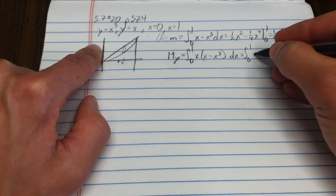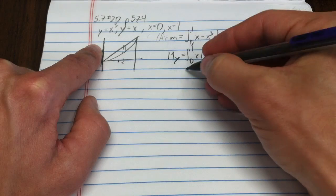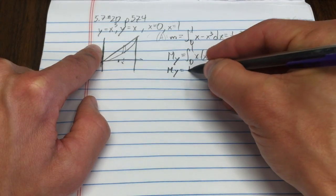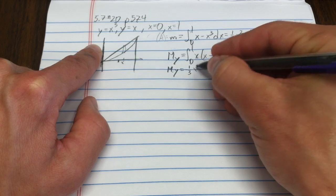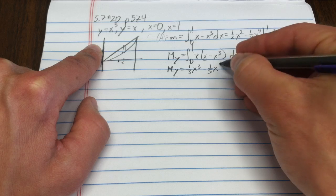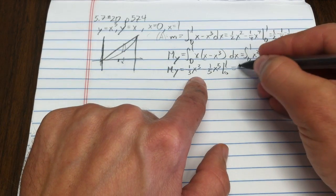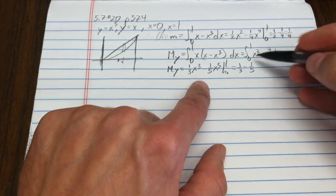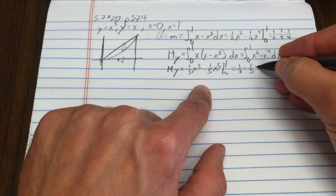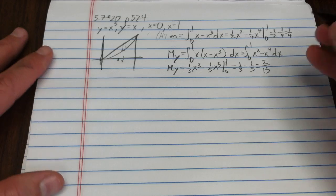If I distribute that, I get x squared minus x to the fourth dx. That comes out to one-third x to the third minus one-fifth x to the fifth, evaluated from 0 to 1. So that's one-third minus one-fifth, or you could think of that as five-fifteenths minus three-fifteenths, which is two-fifteenths.